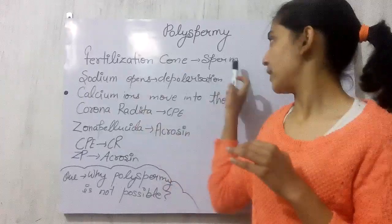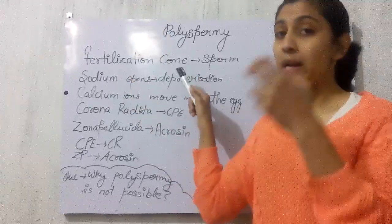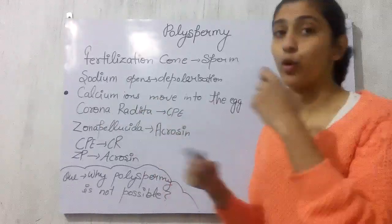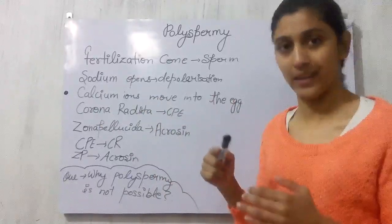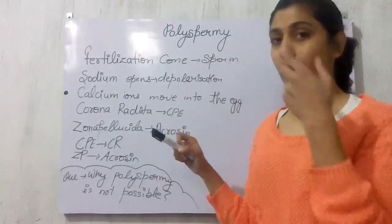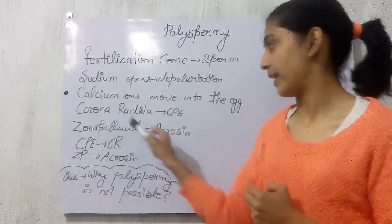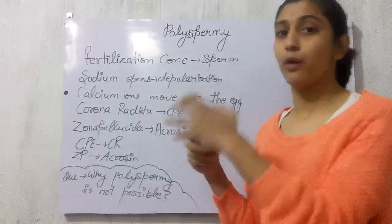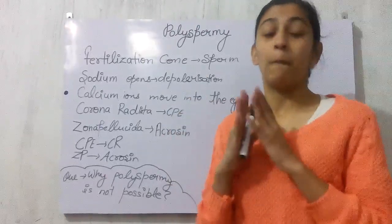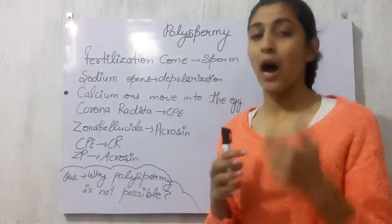Just after the sodium and calcium ion release steps, a hard covering called corona radiata will form outside the fertilization cone. Another hard layer which forms more outside the corona radiata is zona pellucida. Because of these two hard layers — corona radiata and zona pellucida — another sperm will not be able to fuse the egg, and so polyspermy is prevented.